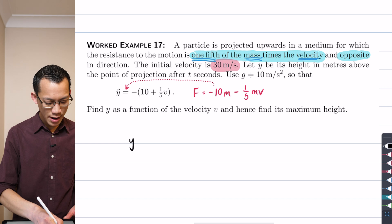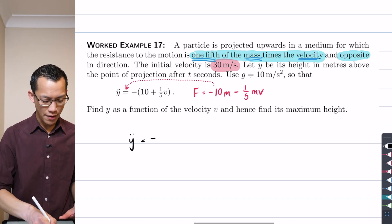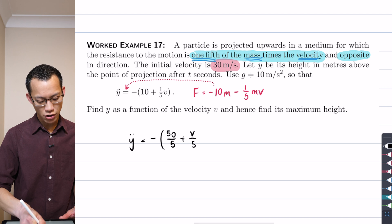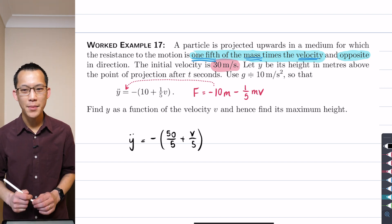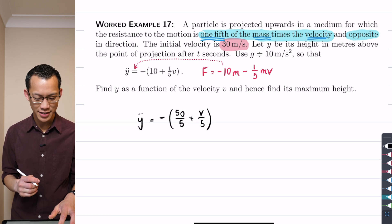So if for example, I wrote down y double dot and I'm going to put this together as one fraction. So if I put say for example, this is going to be 50 on 5 plus v on 5, I'm trying to get my common denominator here. Which form is going to be most helpful? Post it in the chat, I'll give you a second, just like we did on Tuesday.